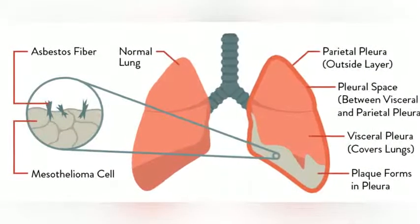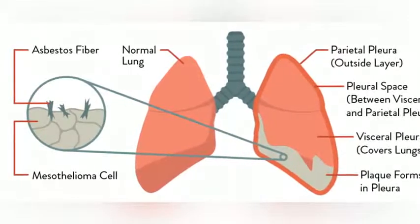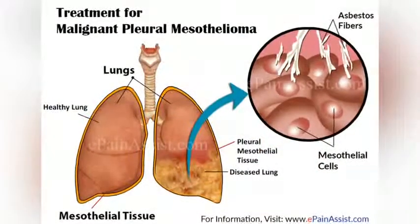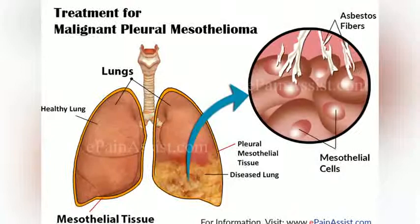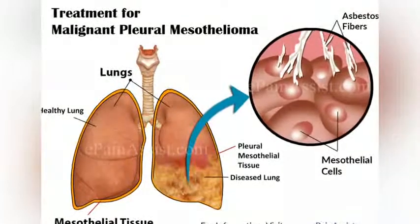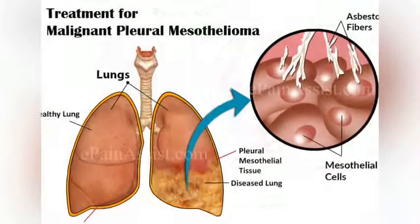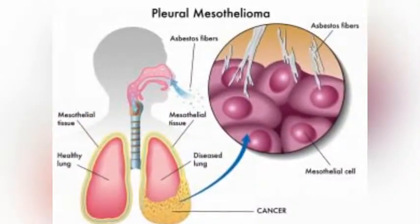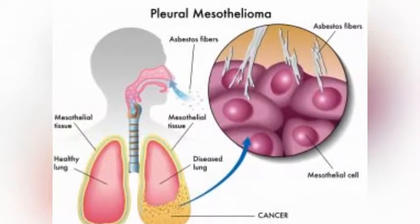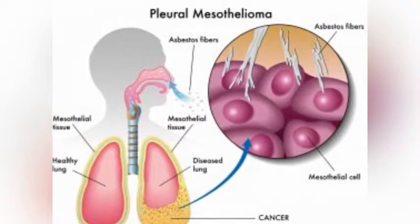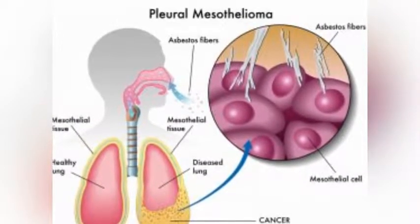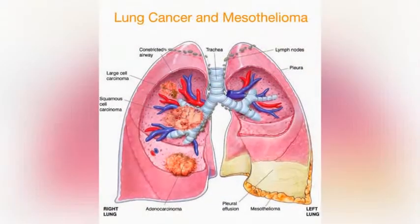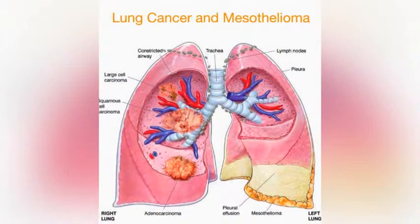Symptoms or signs of mesothelioma may not appear until 20 to 50 years, or more, after exposure to asbestos. Shortness of breath, cough, and pain in the chest due to an accumulation of fluid in the pleural space — pleural effusion — are often symptoms of pleural mesothelioma.